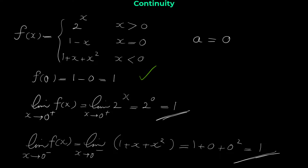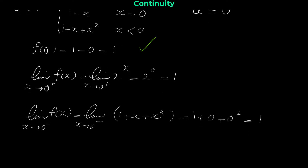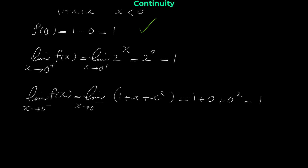The right limit and the left limit both exist and are equal to each other — both equal 1. This shows that the limit of f of x when x approaches 0 exists and equals 1. So the second condition of continuity is satisfied.